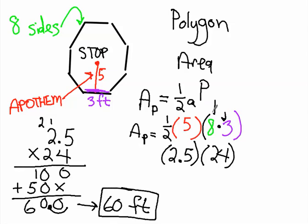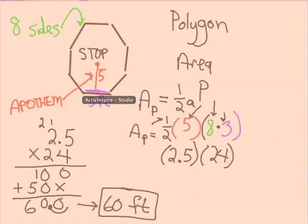By how many sides there are, and then you multiply that by the apothem, and you multiply that by one half. And that is how you find the area of a polygon.